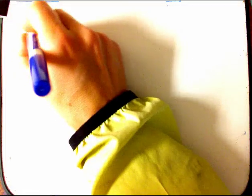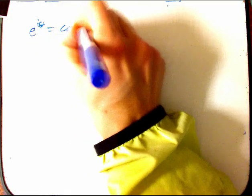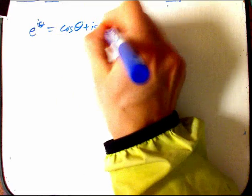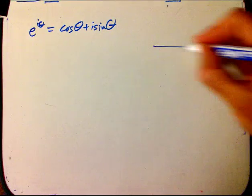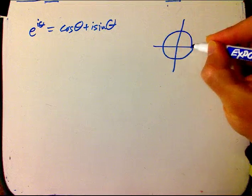For us, the most, most, most important thing is really, I'm going to rewrite it, e to the i theta is cosine theta plus i sine theta. Why is it so important? It's because it encodes incredibly important geometry, namely the unit circle. That as theta goes from zero to two pi, e to the i theta goes around here.